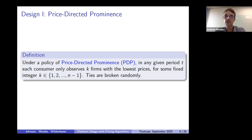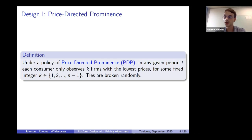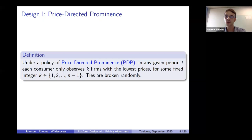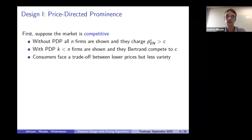Given this simple policy, let me look at the implications for market outcomes. I'll focus almost exclusively on implications for prices and consumer surplus, though in the paper we also look at platform profits. When examining the effects of these interventions, it's important to distinguish whether sellers are playing competitively or cooperatively. Let's start with the competitive case, where sellers act as if this were the only period — they just play statically.